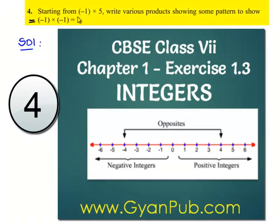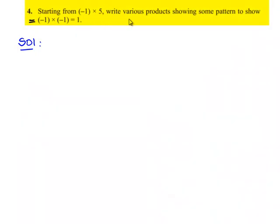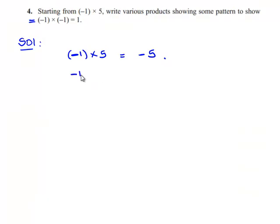We'll see the fourth question: starting from negative 1 times 5, write various products showing some pattern to show that negative 1 times negative 1 gives 1. We'll start off with negative 1 times 5 — 1 into 5 gives 5, and as the signs are opposite, we get negative 5.